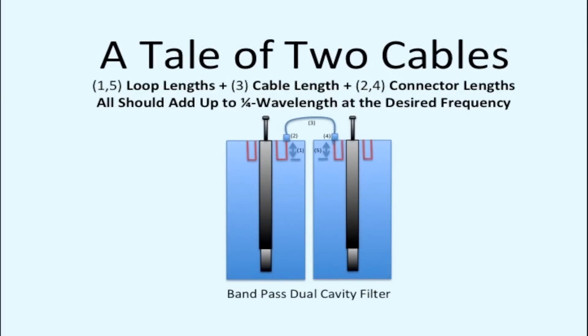And of course you have to take into account the loop links at 1 and 5 here, the cable links at 3, that's the cable between, and the connector links at 2 and 4. They should all add up to a quarter wavelength at the desired frequency for this bandpass dual cavity filter. For a combiner you would take into account the lengths of other things like the junction and connectors for that. So this is the kind of thing that you have to be concerned about when you're trying to work with this type of equipment.